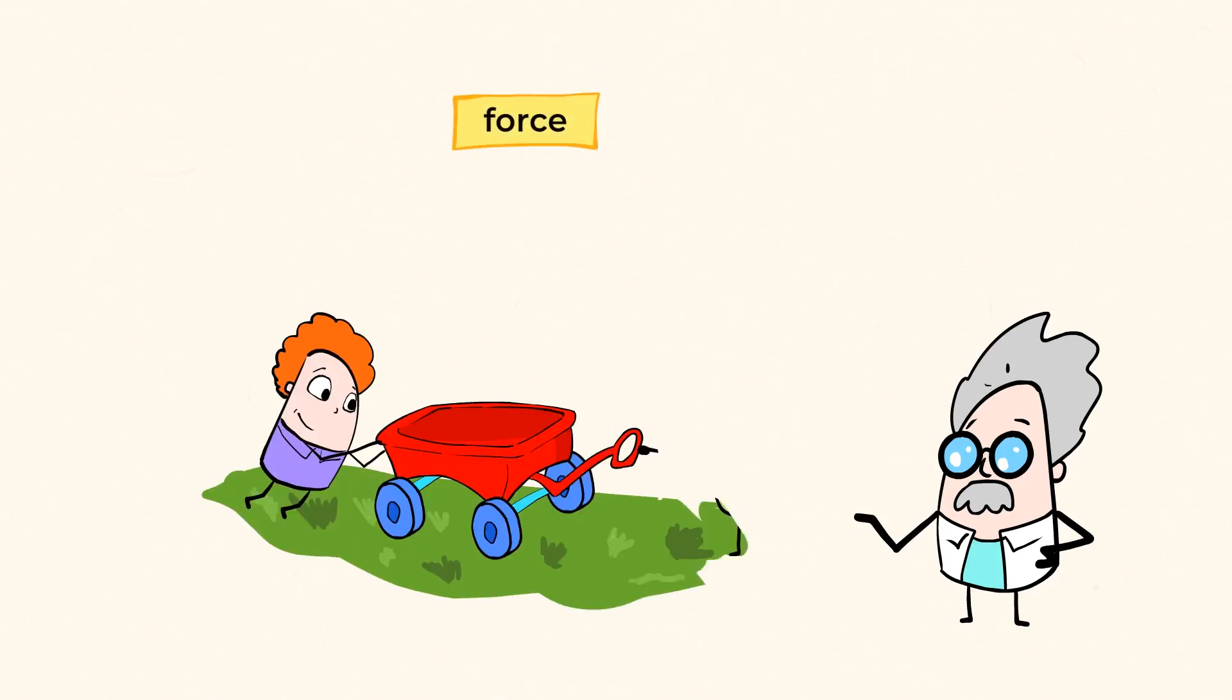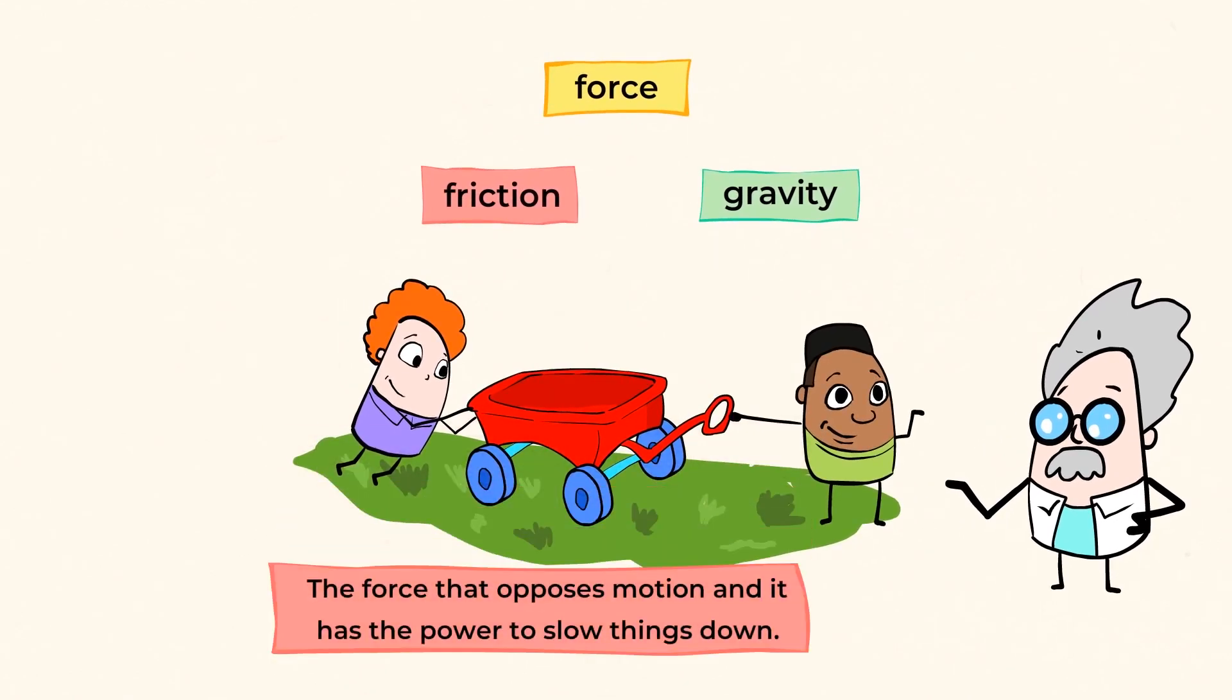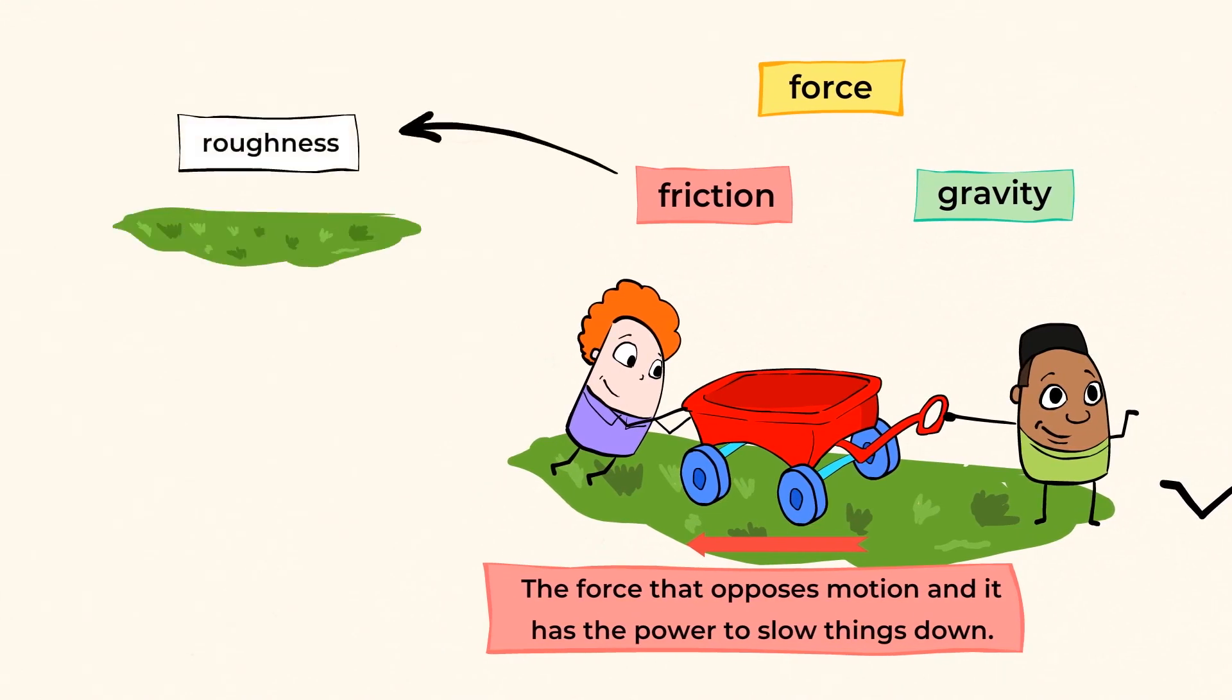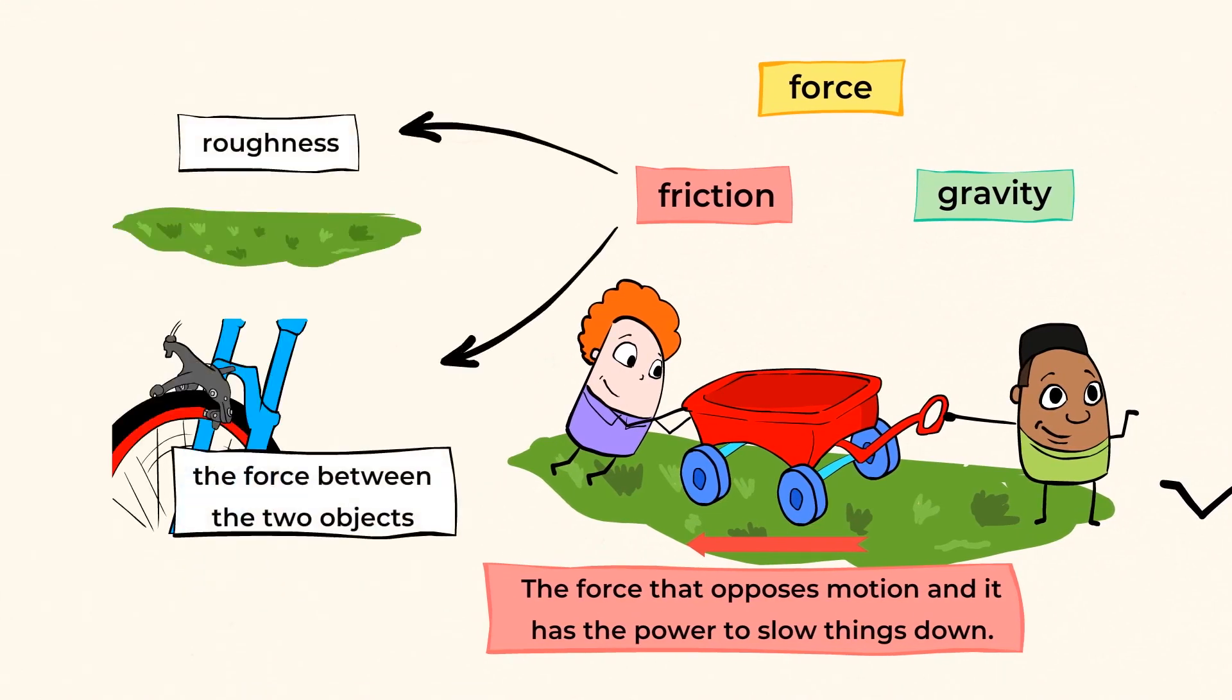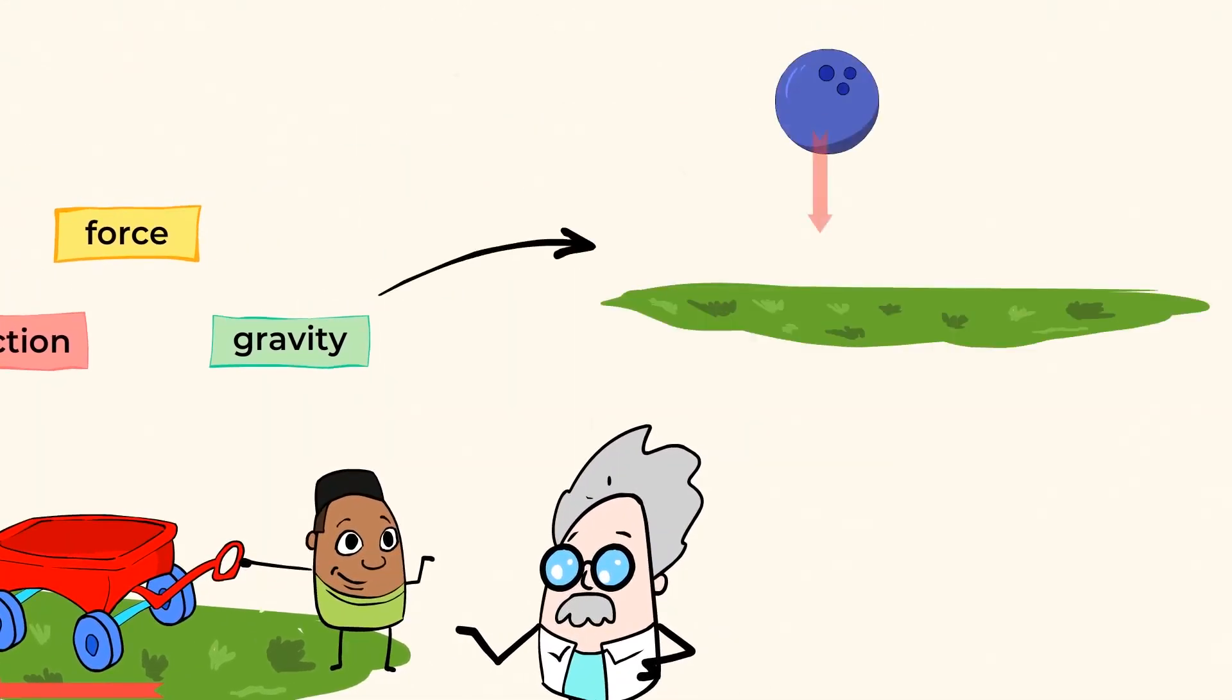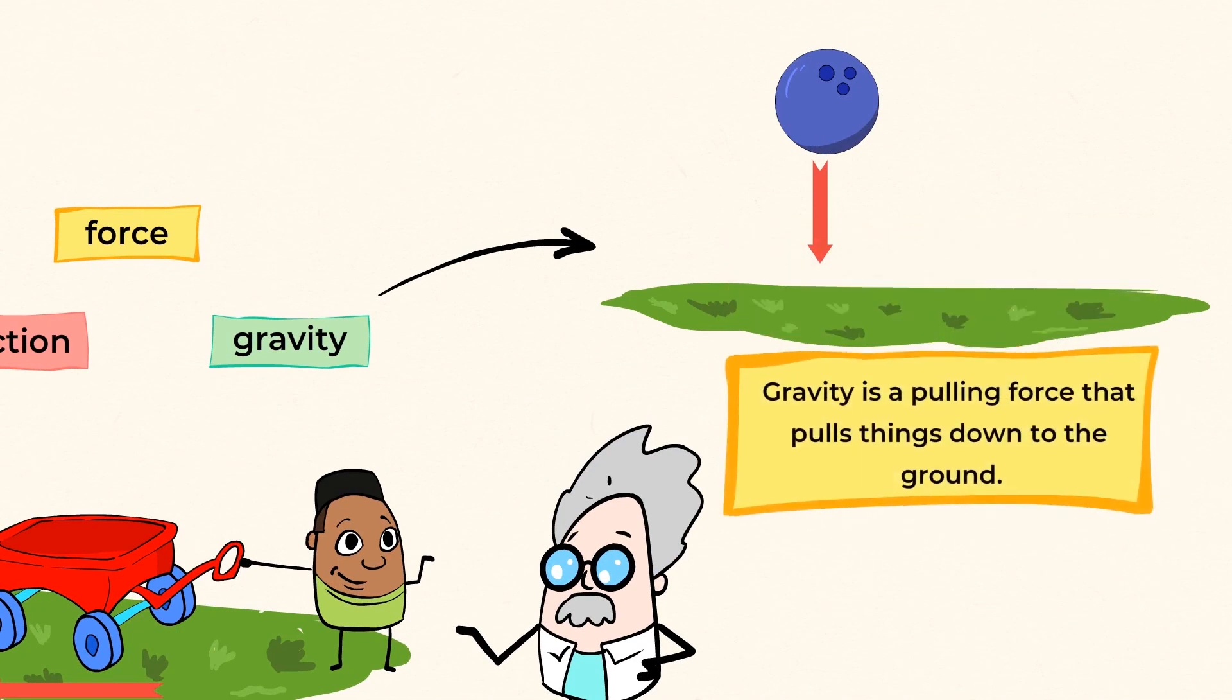Two new forces from today. Friction and gravity. The force that opposes motion is called friction, and it has the power to slow things down. The factors that affect friction are the roughness of the surfaces and the force between the two objects. When you drop something on the ground, it falls because of gravity. Gravity is a pulling force that pulls things down to the ground.